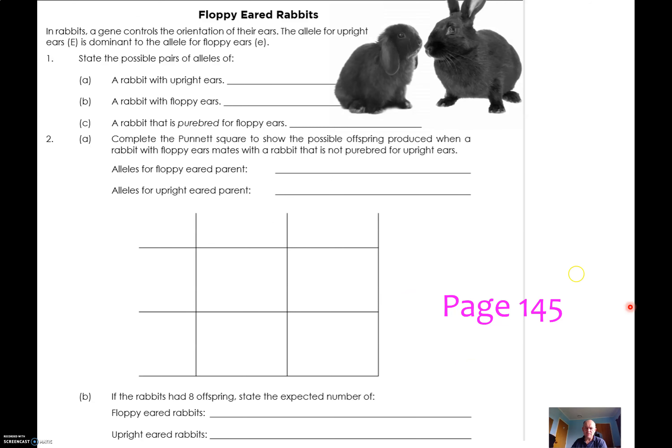Moving along, we've got a couple of questions here on page 145 and I've put this here so you can find it in your book. The upright ears is dominant, the allele for floppy ears is recessive. We'll use a lowercase e.